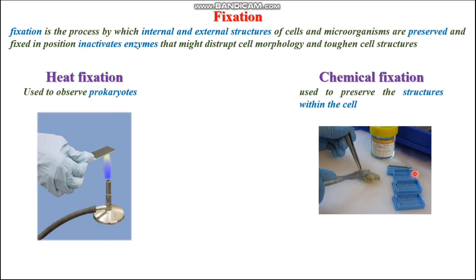Now let us discuss fixation. Fixation is a process by which the internal and external structures of cells and microorganisms are preserved and fixed in position. The main thing happening in fixation is that it inactivates the enzymes that have the possibility to disrupt cell morphology and cellular structures. Fixation is of two types: heat fixation and chemical fixation. Heat fixation is used to observe prokaryotes, and chemical fixation is used to preserve structures within the cells.